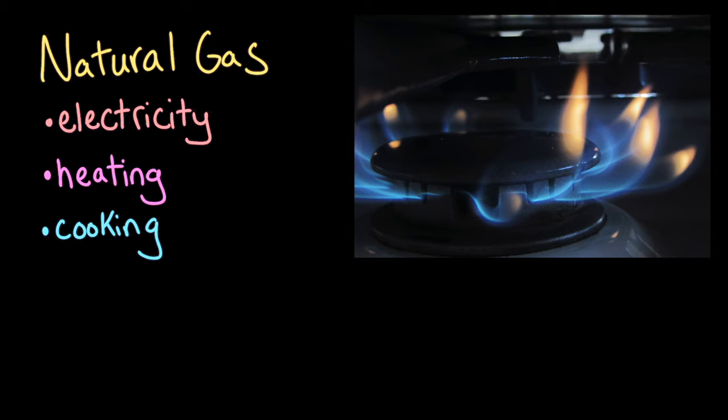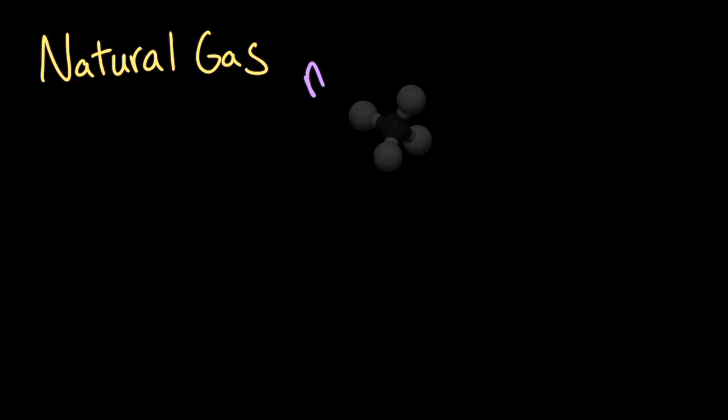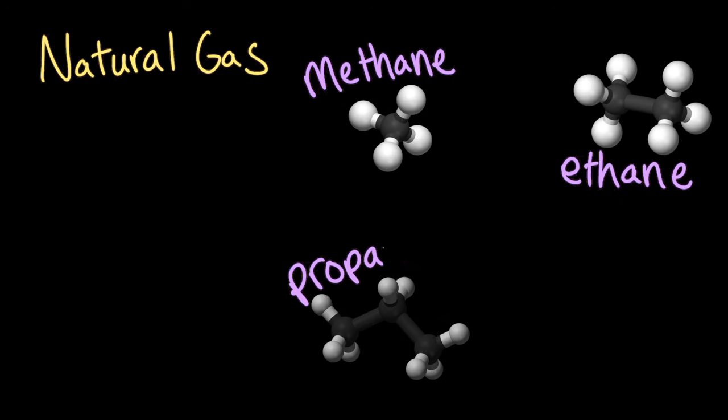Your oven, furnace, water heater, dryer, or grill all might run on natural gas. Natural gas is a naturally occurring mixture of gases, and it's mostly made up of methane, ethane, propane, and butane.